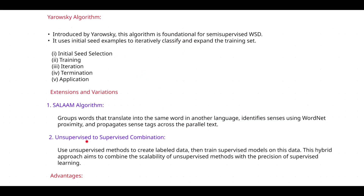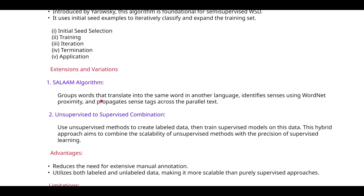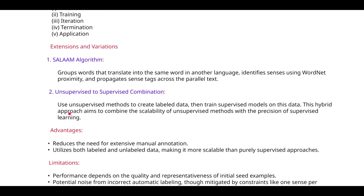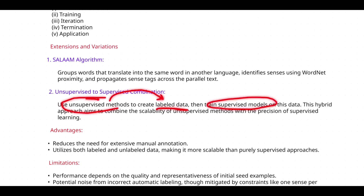The second extension is the unsupervised-to-supervised combination. In this approach, unsupervised methods are used to create labeled data, and then supervised models are trained on this data. This hybrid approach combines the scalability of unsupervised methods with the precision of supervised learning. You start with unlabeled data, use unsupervised methods to convert it to labeled data, and then train supervised models on that labeled data — combining both unsupervised and supervised models to achieve semi-supervised learning.